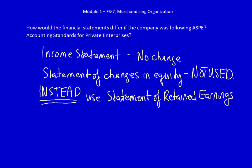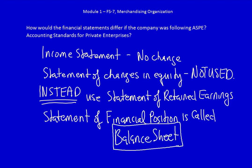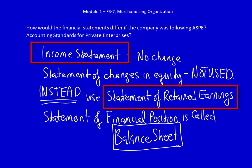Are there any other differences? Yes. The statement of financial position is called the balance sheet. There's no change to the format — the only thing that happens is instead of calling it the statement of financial position, we call it the balance sheet. So if we were completing financial statements for a company using ASPE, we would do the same income statement, the statement of retained earnings, and the statement of financial position — but we would call it the balance sheet. Otherwise, there are no additional changes between IFRS and ASPE financial statements.